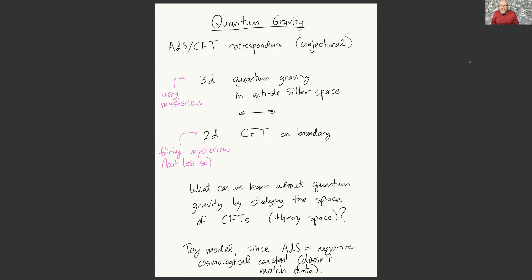The big picture from a physics perspective is quantum gravity—wildly speculative but really fascinating. One of the biggest problems in physics is that general relativity and quantum mechanics are not directly compatible, and we need a theory of quantum gravity that unifies these. One of the big ideas in modern theoretical physics is the AdS/CFT correspondence, which says certain theories of quantum gravity—for example quantum gravity in three dimensions—should correspond to certain two-dimensional conformal field theories.